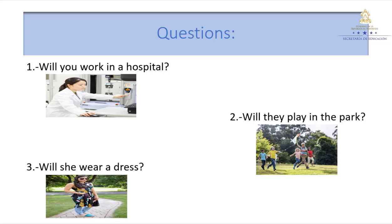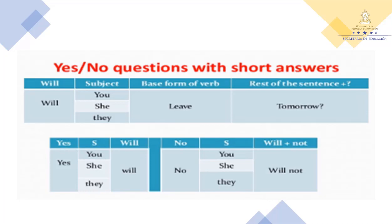Good class. Now we continue. In this chart, do you see the short answers? Remember, for the affirmative we use 'yes', and for the negative we use 'no'. Remember, the contraction in the negative for 'will' plus 'not' is 'won't'. Let's say: Will you leave tomorrow? Yes, I will — affirmative. No, I won't — negative. Remember the short answers.